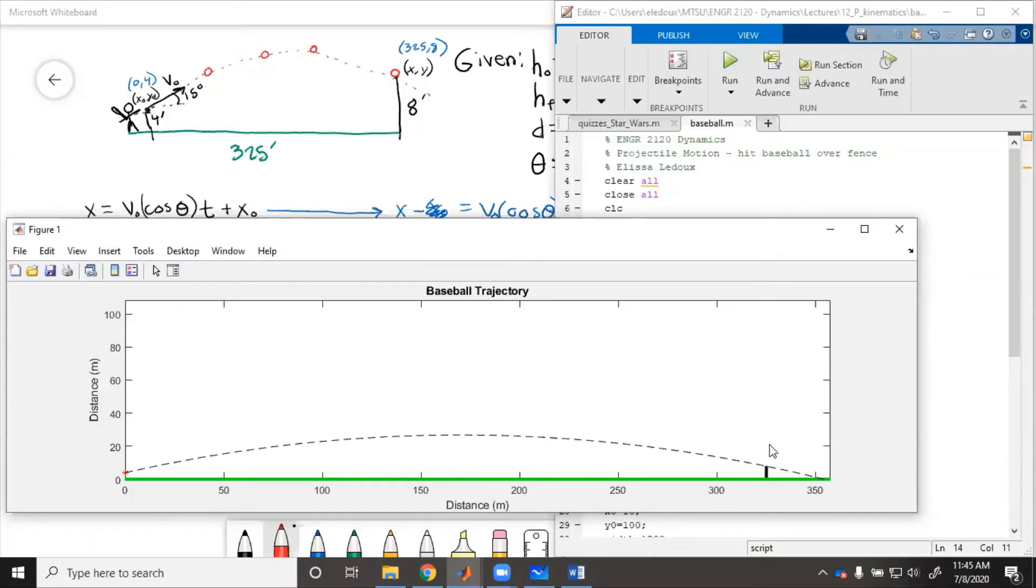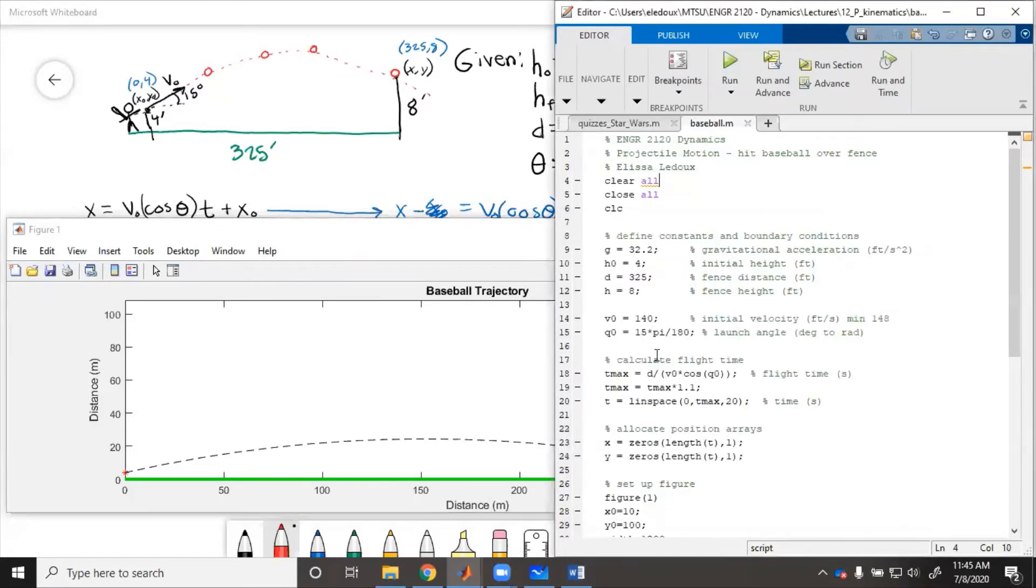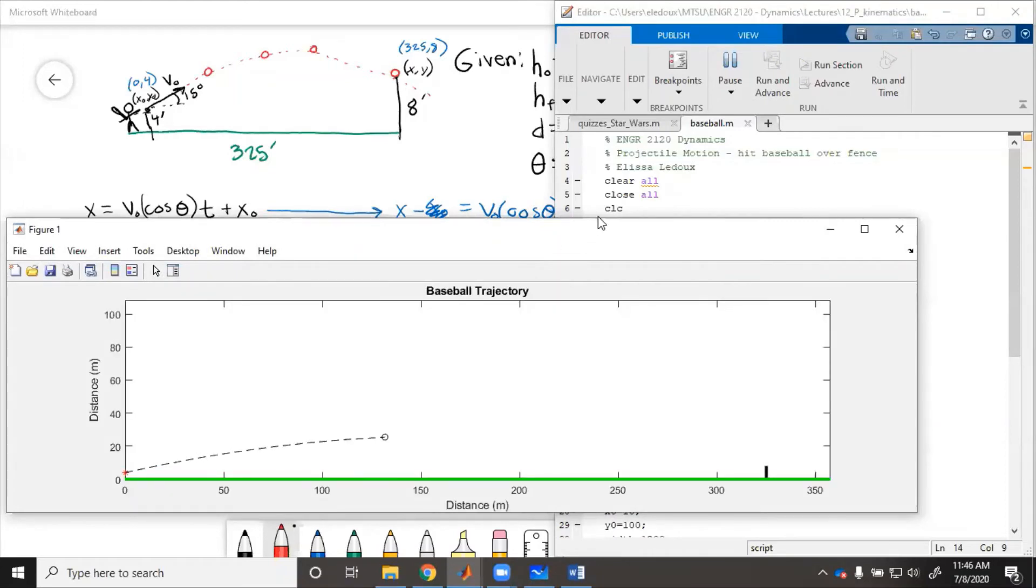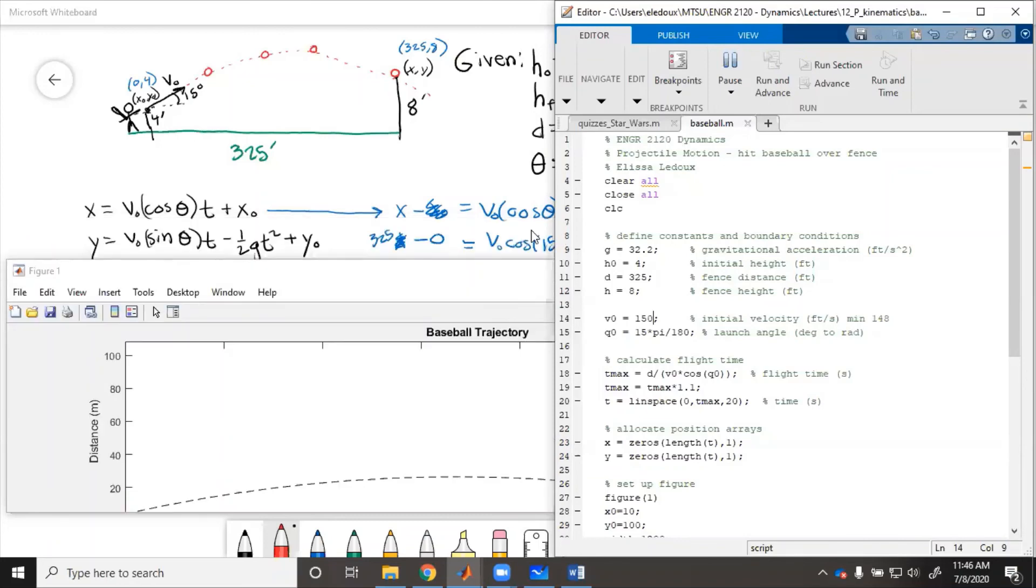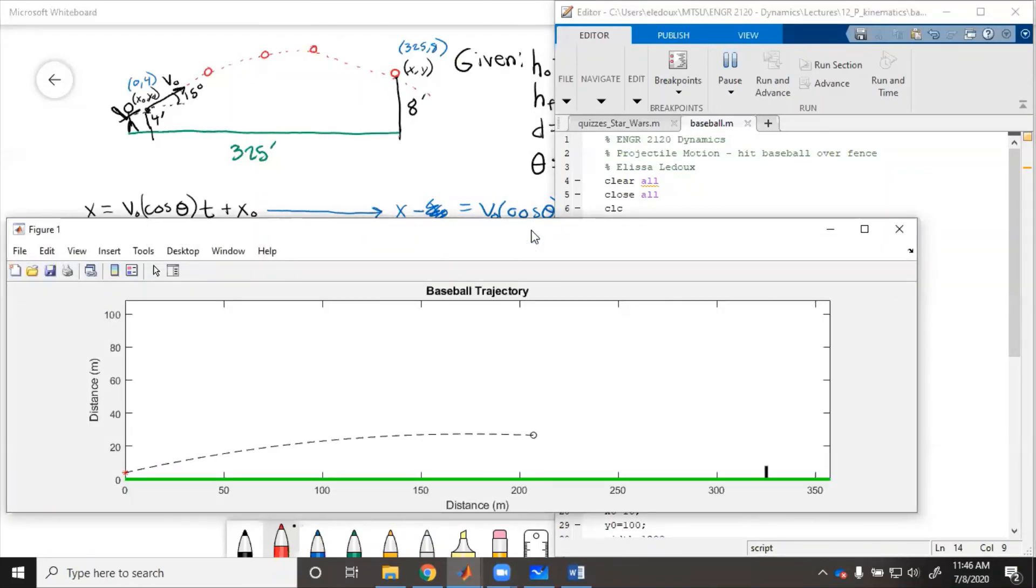So you see, the ball clears the fence. That little bitty difference can really keep you from hitting the home run. So we try 147. You can see there's that little bit at the top, it didn't quite make it over. But then if we go something a little bit higher, say 150, you see there's definitely room.